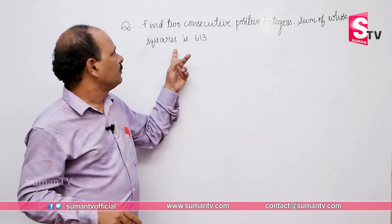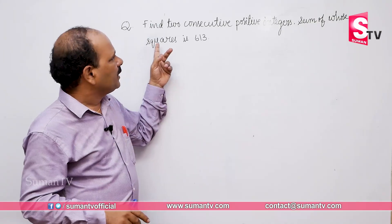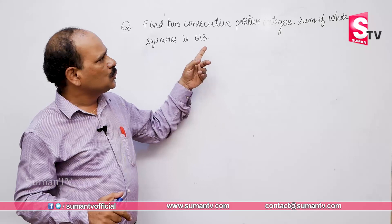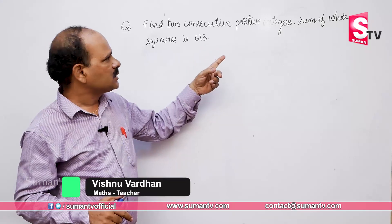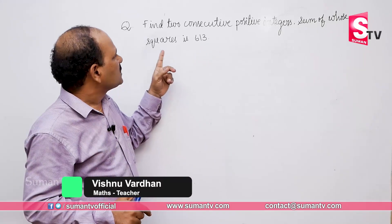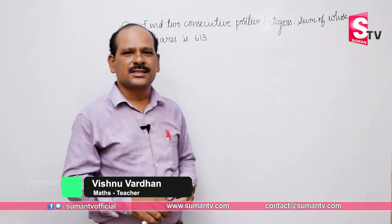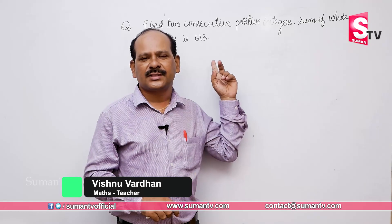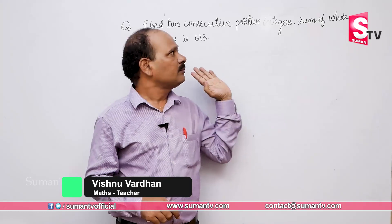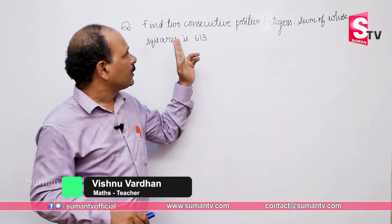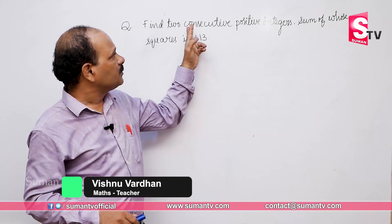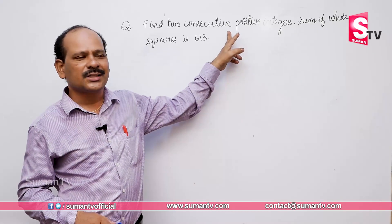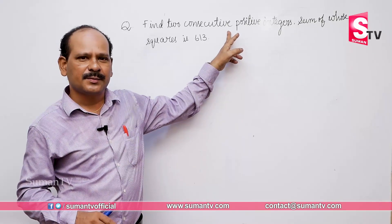Have a look at this problem: find two consecutive positive numbers whose sum of squares is 613. This is the information given in the question. First, what is the meaning of consecutive positive numbers?